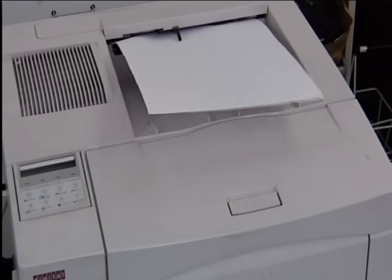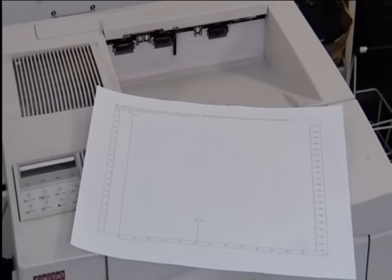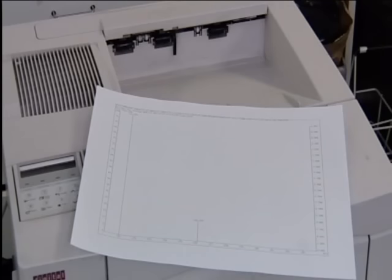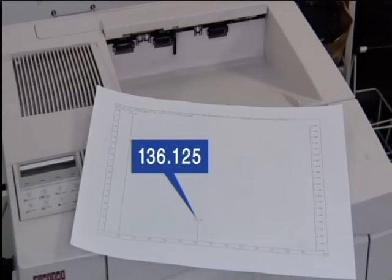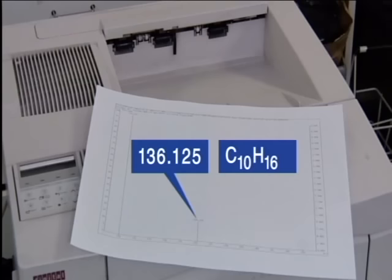Simple mass spectra show the masses of ions to the nearest whole number, which is fine for many purposes. However, this instrument can display masses to three decimal places of an atomic mass unit — this is called a high-resolution spectrum. It enables us to distinguish between different molecular formulae which have the same relative molecular mass to the nearest whole number. Here, we see that the relative molecular mass of limonene is 136.125. This means that we can distinguish C10H16 from, say, C9H12O, which would have a relative molecular mass of 136.194 to three decimal places.